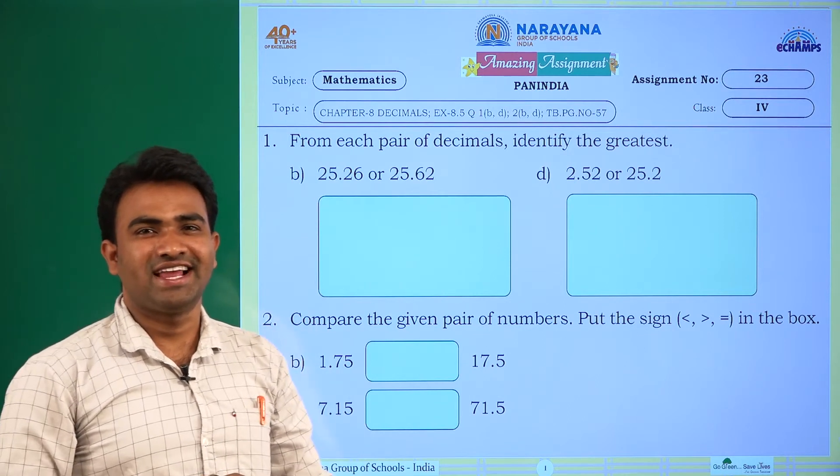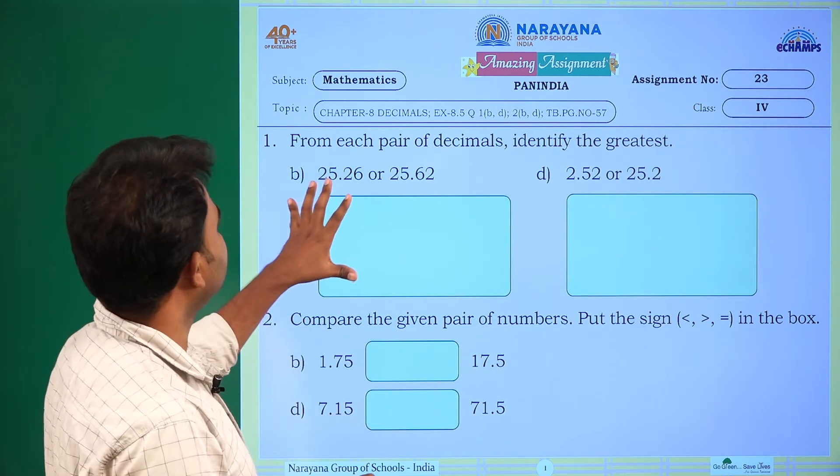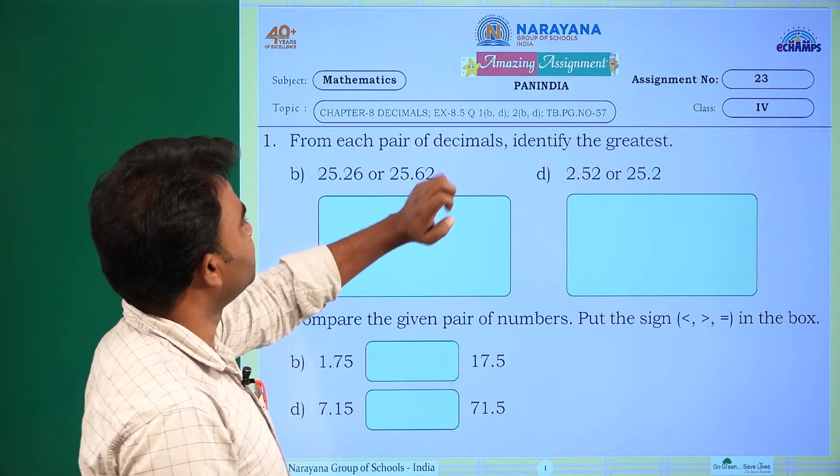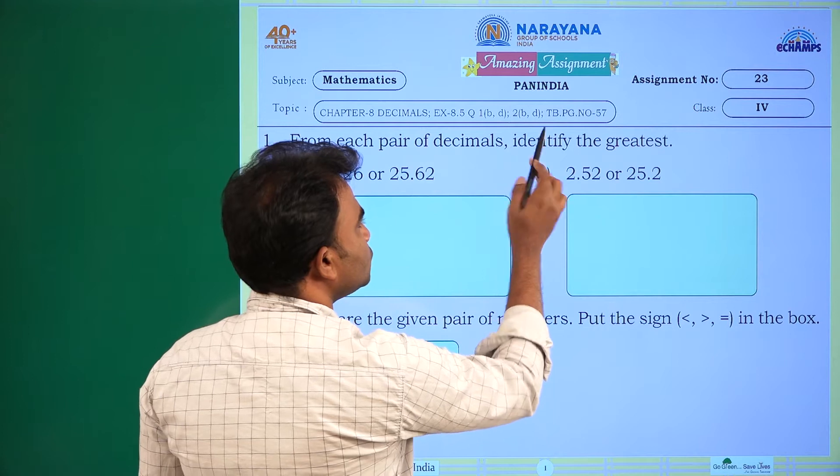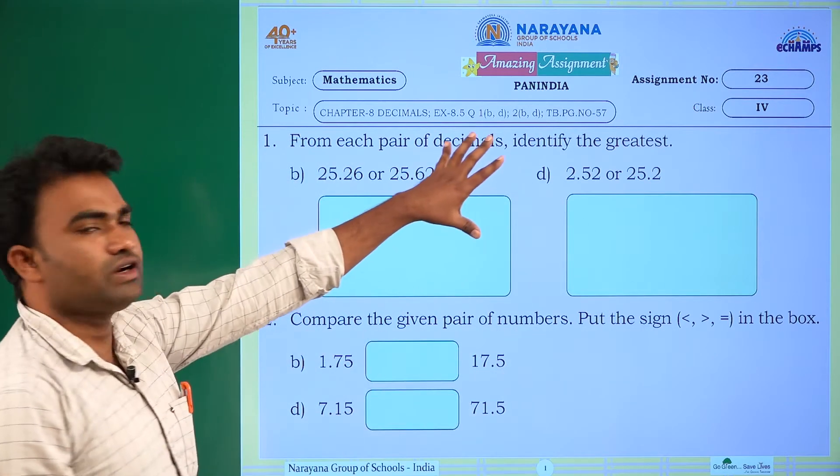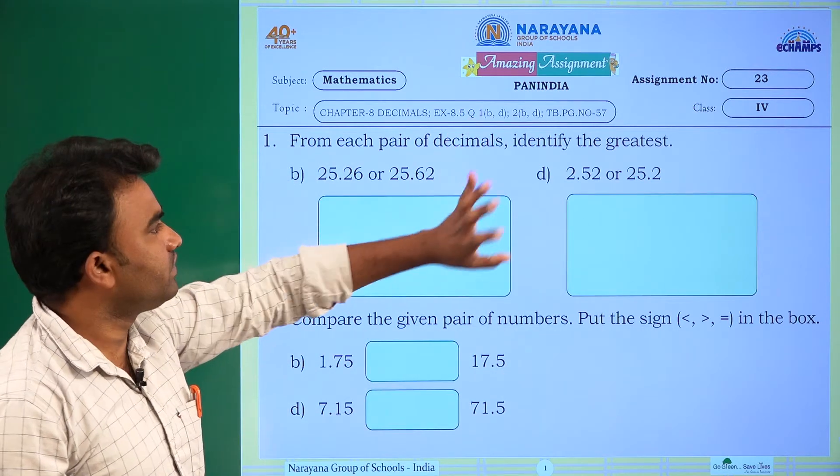Hi children. Welcome to Narayana Live Classes. Today's amazing assignment is on Chapter 8, Decimals, Exercise 8.5, Question 1BD, 2BD. For this you can refer to Textbook page number 57.